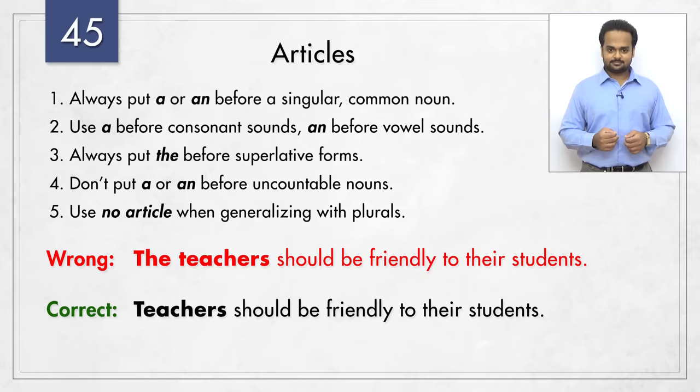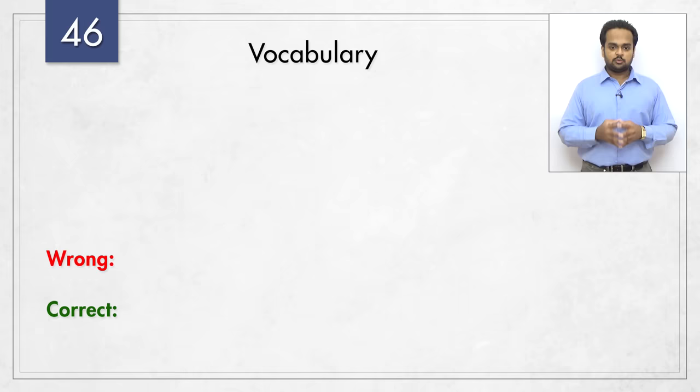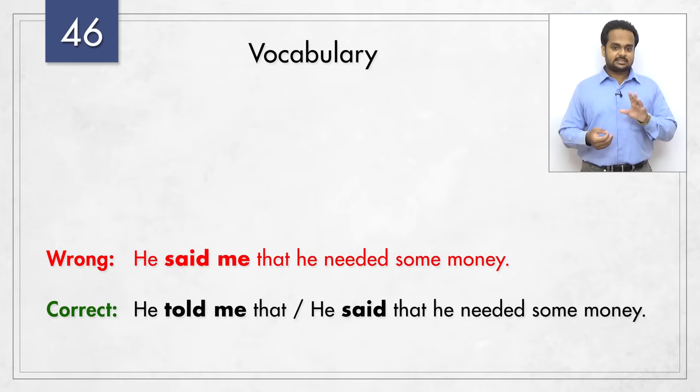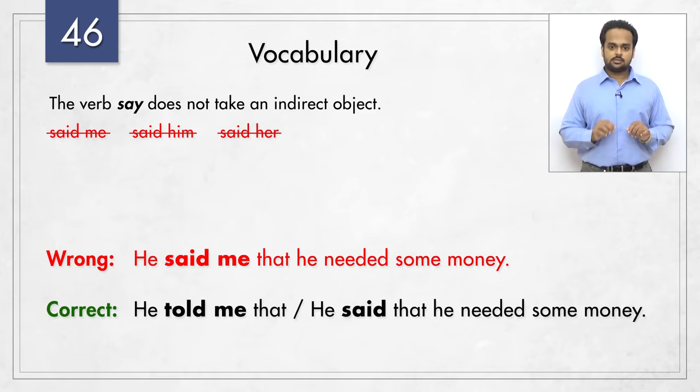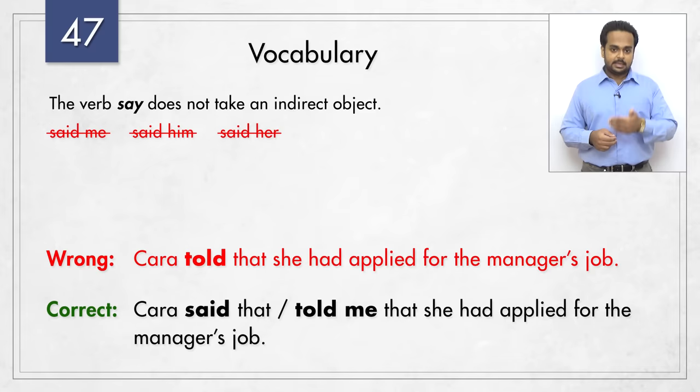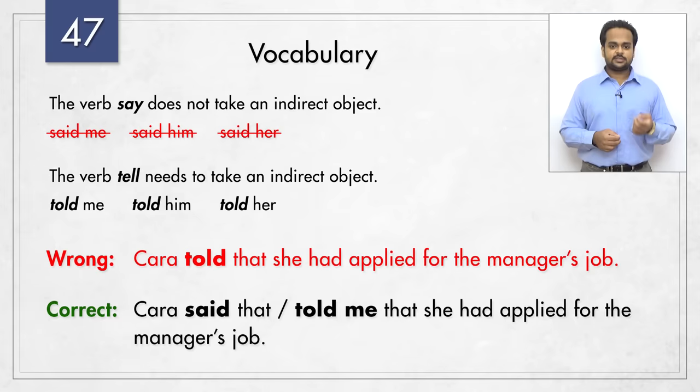Finally, our last topic is errors in vocabulary – that is, in word choice. Here's the first one – 'he said me that he needed some money.' This can be either 'he told me that he needed some money' or 'he said that he needed some money.' The verb 'say' does not take an indirect object, meaning you cannot say 'said me,' 'said him,' and so on. So what about 'Kara told that she had applied for the manager's job'? This should be 'Kara said' or 'Kara told me that she had applied for the manager's job.' The verb 'tell' usually needs an indirect object like me, him, her, etc.